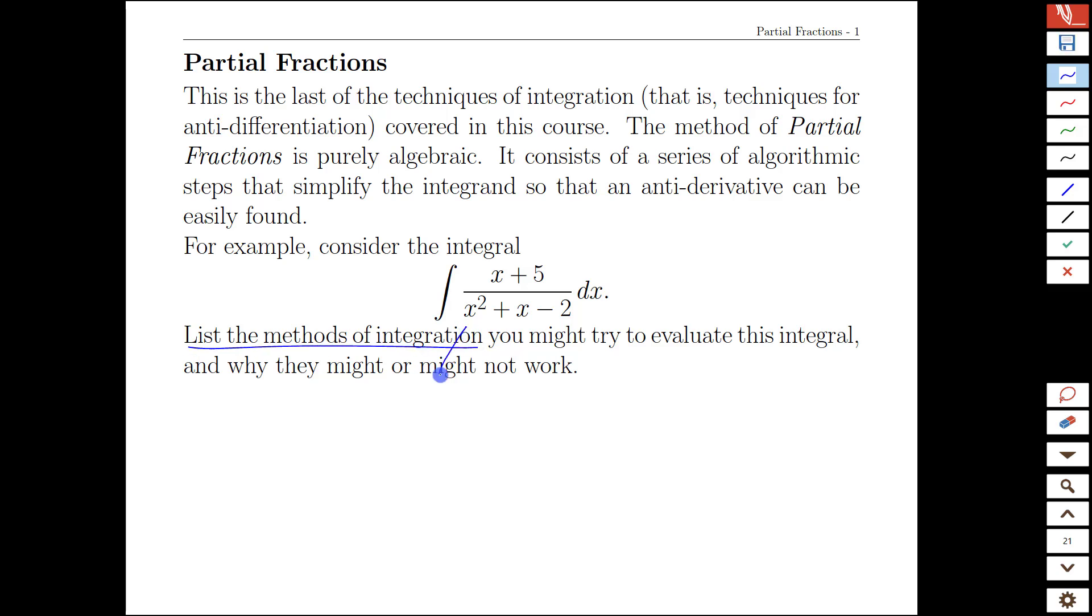Well, one thing we might try would be substitutions. The inside type functions, maybe we could try using u equals x squared plus x minus 2. If we did that, then du would be 2x plus 1. That doesn't cancel with the numerator very nicely. It turns out to get us into a whole mess of other things that don't really help.